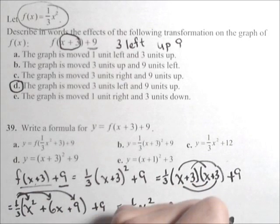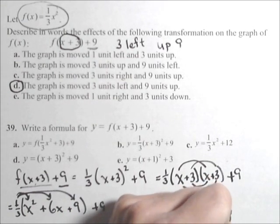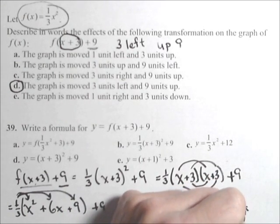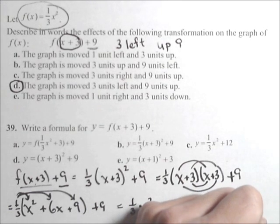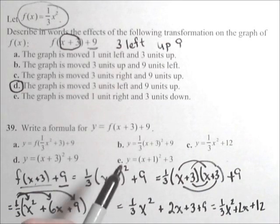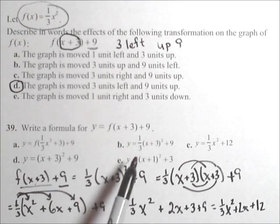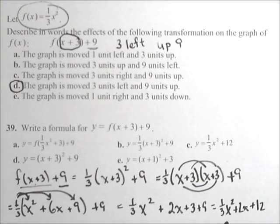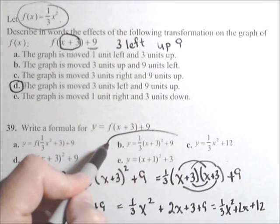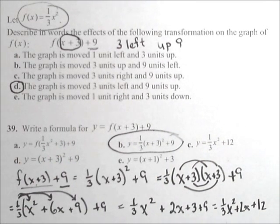So finally, we get one-third x squared plus two x plus twelve. And there's our final answer. So, oh, that would be our simplified answer. We didn't need to simplify, but it's good that we went through that anyways.